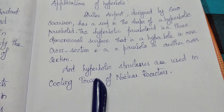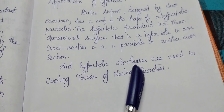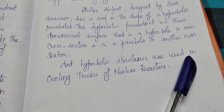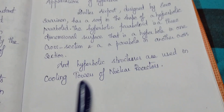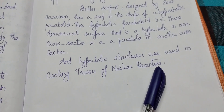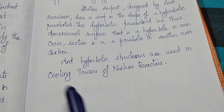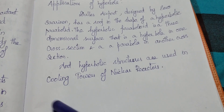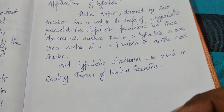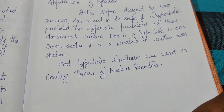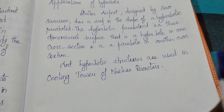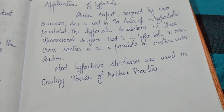Hyperbolic structures are used in cooling towers of nuclear reactors. Now you can see the Dulles airport and nuclear reactors.